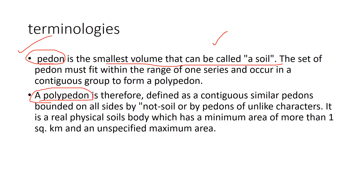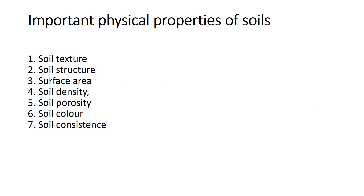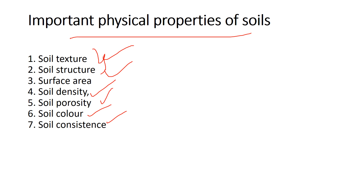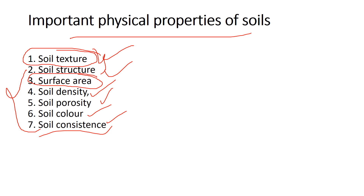Pedon is the smallest volume that can be called a soil, and when a number of pedons combine together they form a polypedon. Moving on, the important physical properties of soil include texture, structure, color, consistency, density, porosity, and surface area. Soils are classified into various types depending on each physical property. Today we will focus on soil texture alone; the other properties will be discussed in upcoming videos.